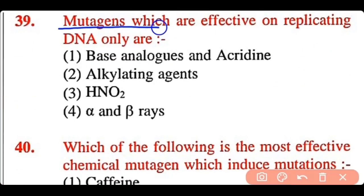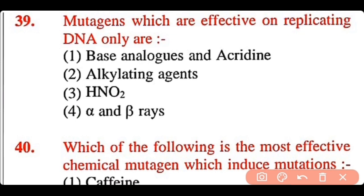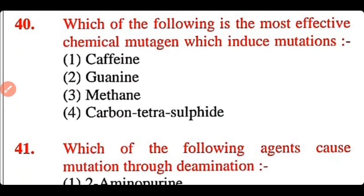Question 39: Mutagens which are effective on replicating DNA only are: base analogs and acridine, alkylating agents, HNO2, or alpha and beta rays. The correct answer is option 1. Base analogs and acridine are the most effective mutagens that affect replication of DNA.